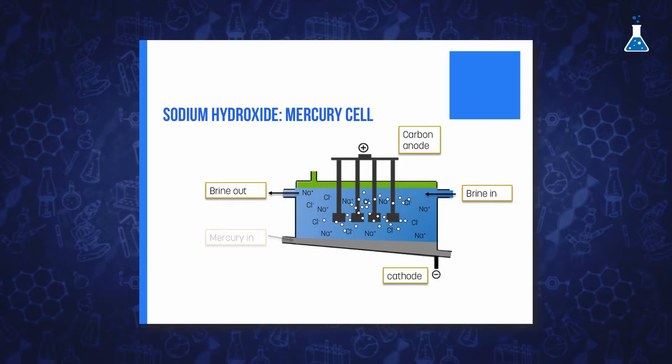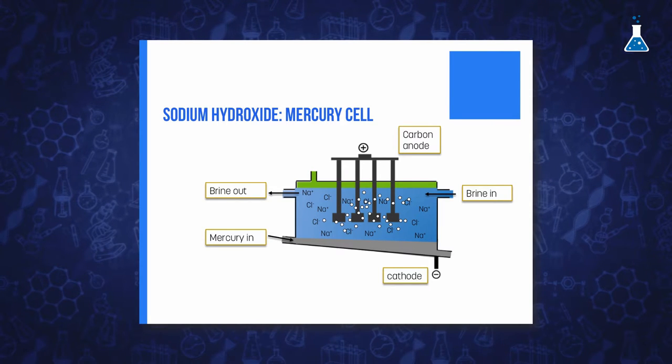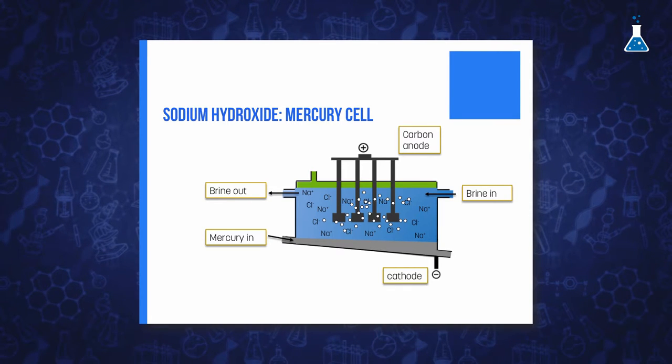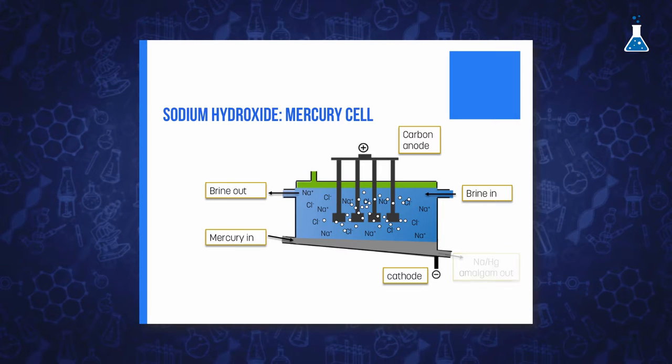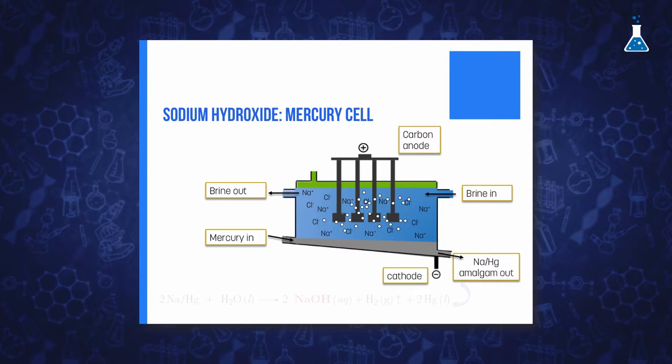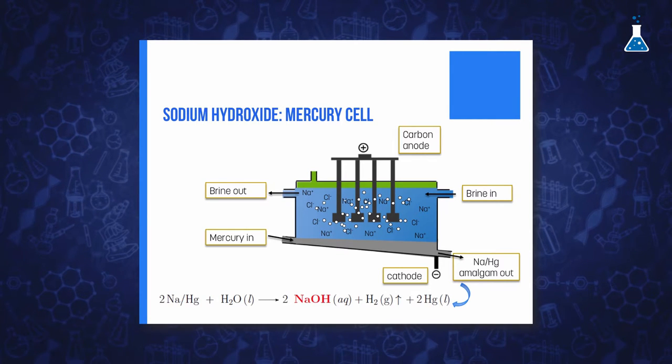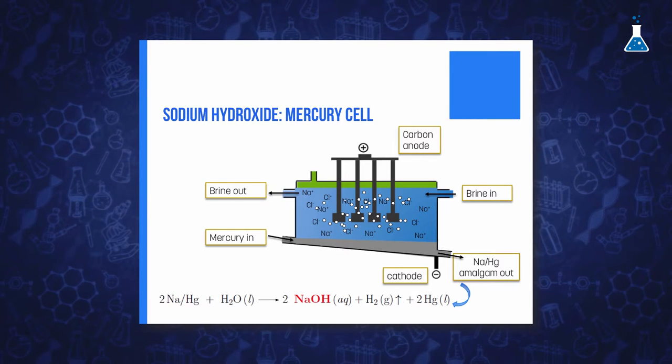In this case, hydrogen is not liberated at the mercury surface because hydrogen gas has a high overvoltage with the mercury electrode. Therefore, sodium cation gets reduced instead of water. Then, sodium dissolves in mercury to form a liquid sodium mercury alloy called sodium amalgam. This sodium amalgam is reacted with water on a graphite surface to give sodium hydroxide and hydrogen gas.